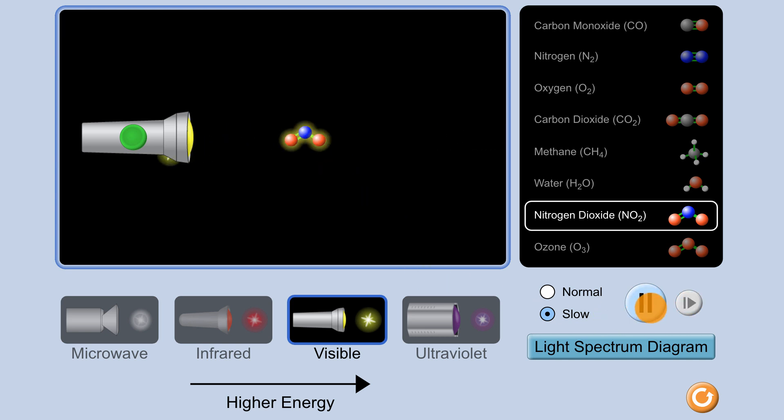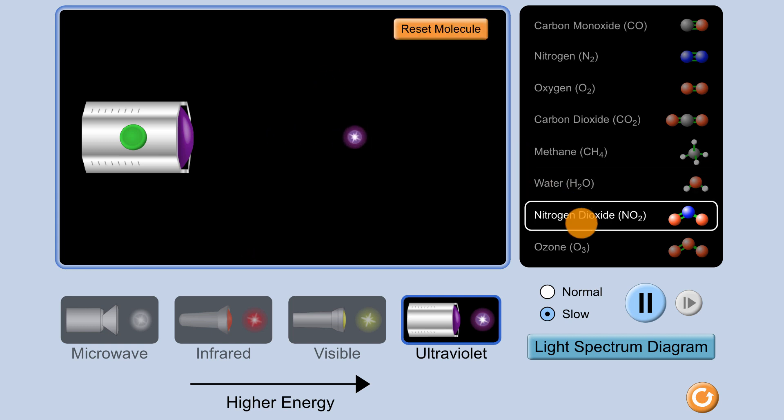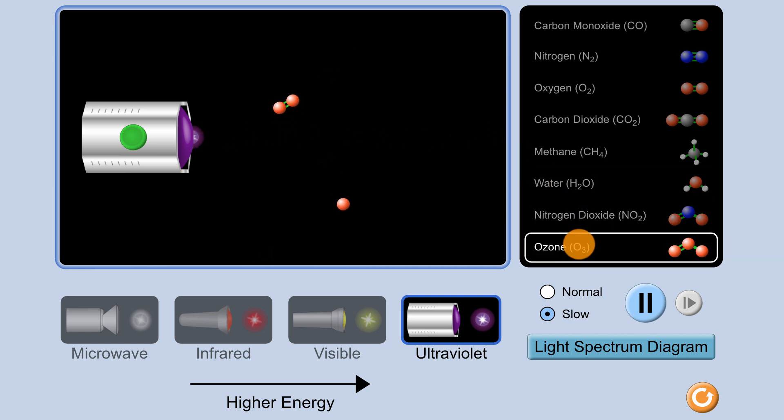Now, what about ultraviolet light, which has even higher energy than visible light. What can that do? Well, here we can see that it takes, in certain cases, electrons, and it's able to excite them so much, that it's able to break that bond itself. So you can actually break bonds. Let's see what it can do to some ozone. Same thing. It excites it so much that it can actually break the bond.